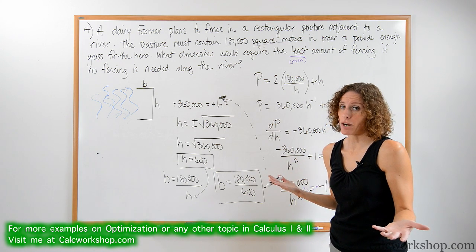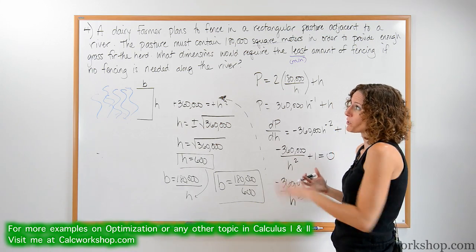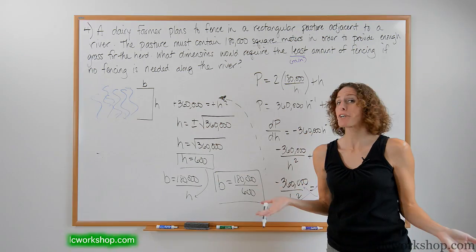That's it for optimization — find two equations, plug one into the other, take a derivative, set it equal to zero, and solve. Now let's look at another example with a rancher.